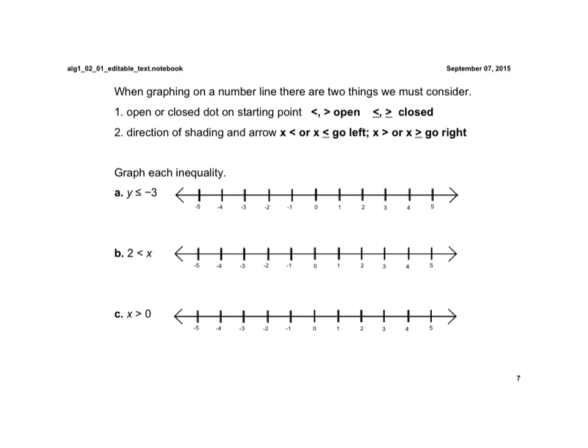And then the direction. I think it's so important — the main thing is to know where the variable is. I always like to rewrite it so the variable is on the left, especially with inequalities. So if it's x is less than, or x is less than or equal to, we're going to go to the left. And if it's greater than or greater than or equal to, we're going to go to the right.